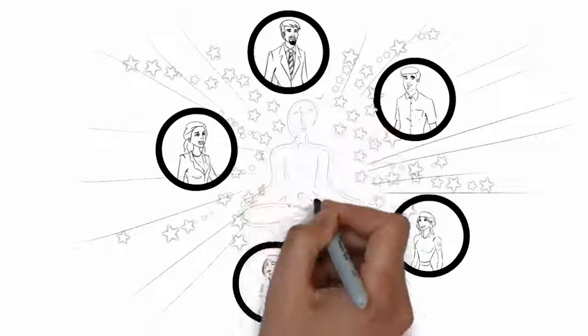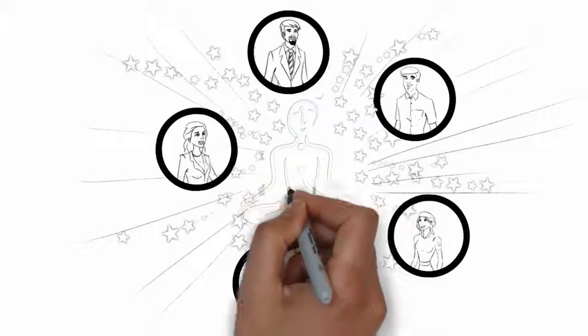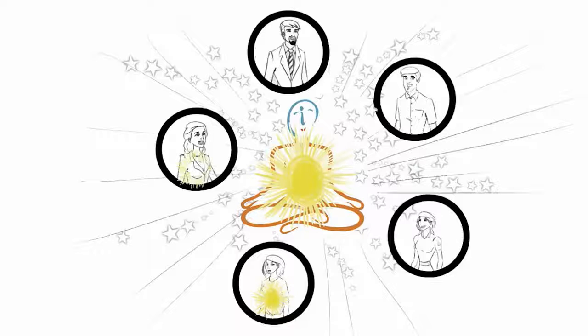Just as the sun radiates life-giving light and heat from the center of the solar system, a solar body radiates positive energy from their center to all those around them.